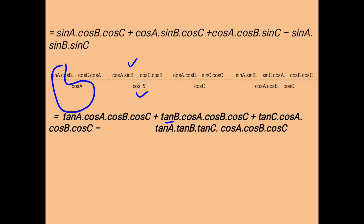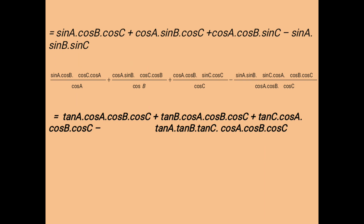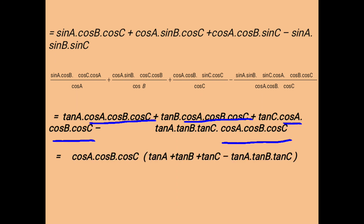We rewrite sinA/cosA as tanA, sinB/cosB as tanB, sinC/cosC as tanC, and sinA·sinB·sinC divided by cosA·cosB·cosC as tanA·tanB·tanC. The remaining factor cosA·cosB·cosC appears in the numerator of all four terms and is therefore common to all. Finally, we take cosA·cosB·cosC as the common factor from all terms.